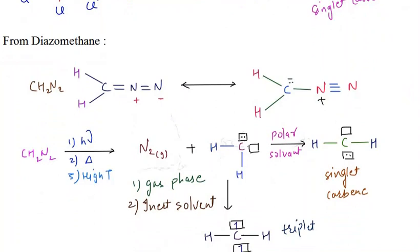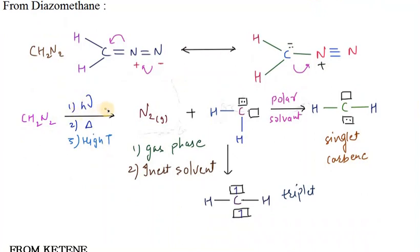The next method of preparation uses diazomethane, which is CH2N2. Diazomethane has two canonical structures that interconvert into each other. To form carbene from diazomethane, three conditions are needed: presence of light, heating, and keeping the solution at higher temperature. When these three conditions are applied, nitrogen gas (N2) is released and a carbene is formed.